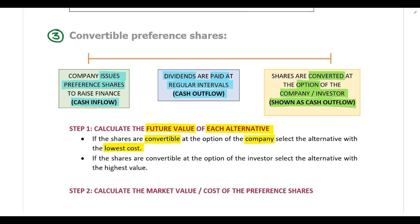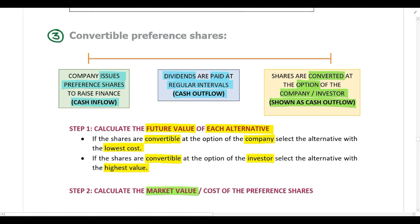However, if it is convertible at the option of the investor, you need to select the alternative with the highest value, because the investor will select what is most beneficial for them. Then, after you've determined the future value of each alternative and which party will choose, in step two you calculate either the market value or the cost of the preferences. Let's go and have a look at an example.